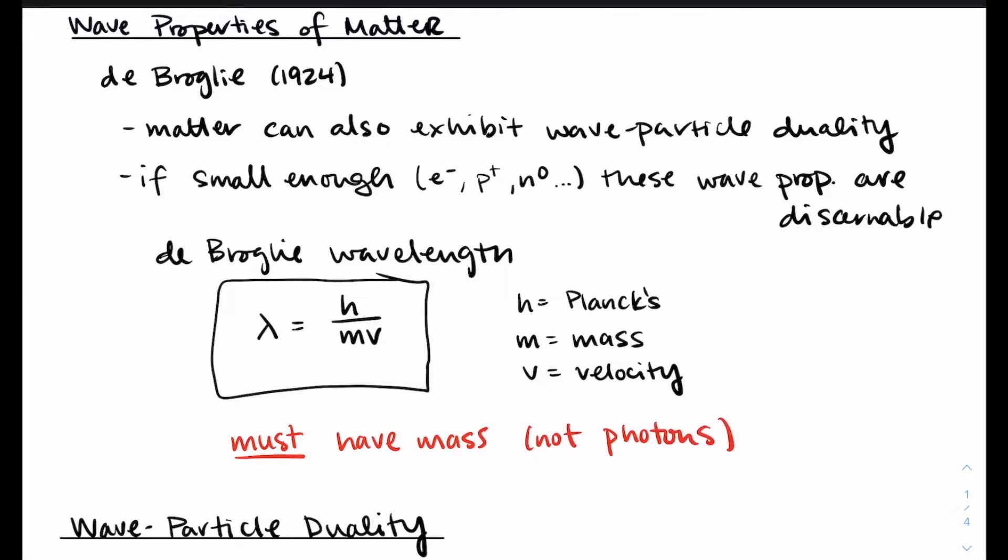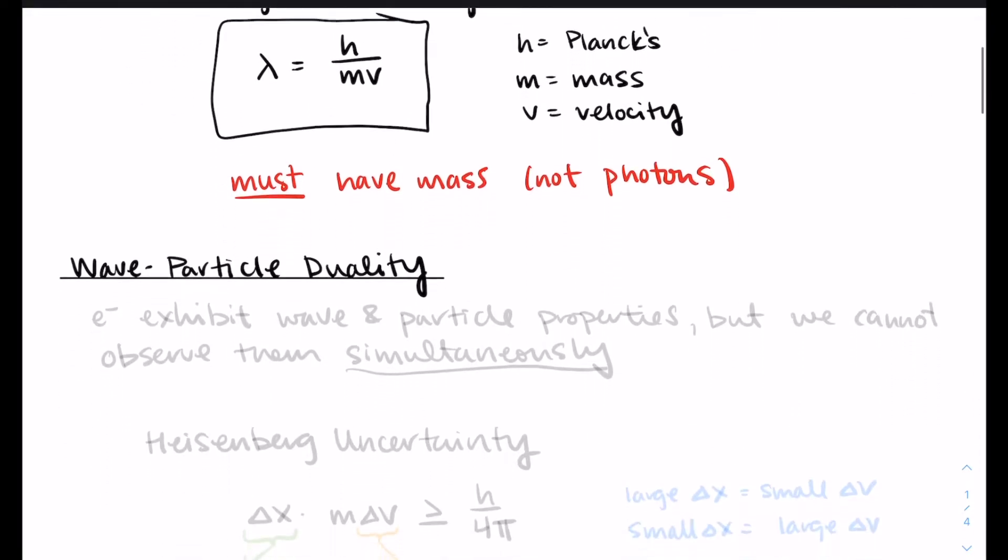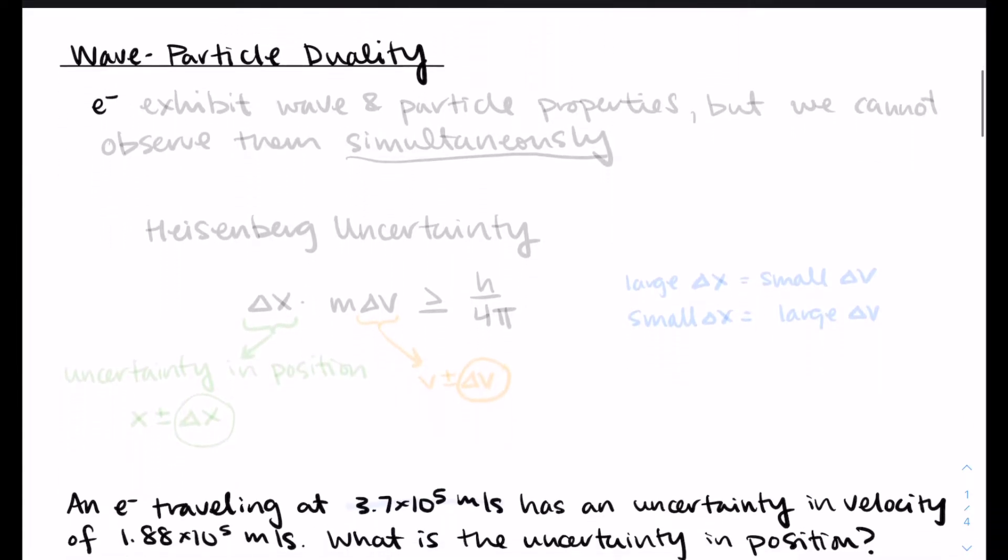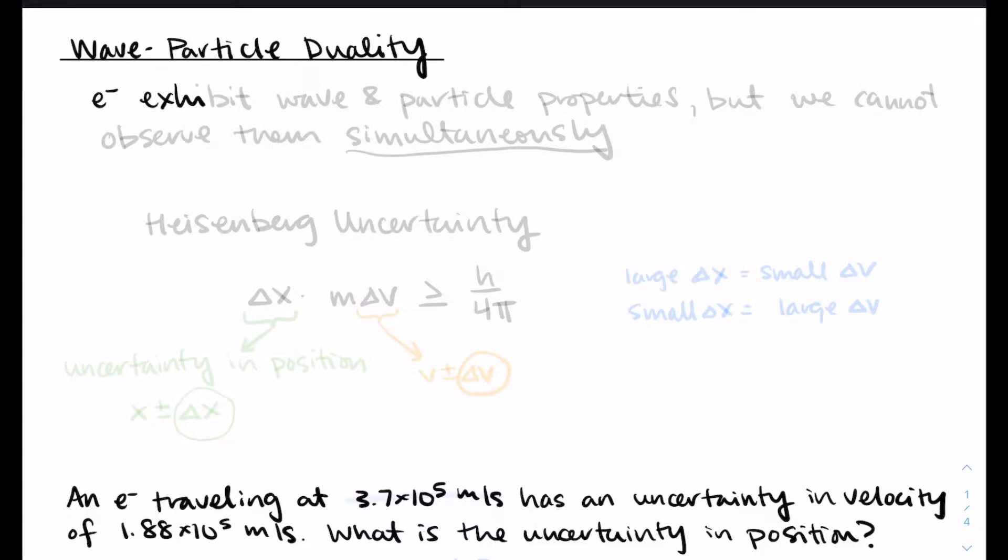So wave-particle duality. What is important and what matters and why we care at this point in chemistry is because electrons exhibit wave properties and particle properties, but since we're in the quantum mechanics chapter, everything is weird, we cannot observe them simultaneously. So we can observe an electron acting like a wave, but at the same time we can't observe it acting like a particle. Or we can observe an electron acting like a particle, but we won't be able to observe it acting like a wave. This is the Heisenberg uncertainty principle.